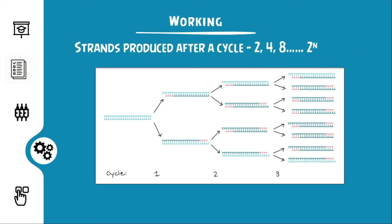For the first cycle, there are around 2 strands produced, and the strand count increases based on the power of 2. For the first cycle, we obtain 2 copies; the second cycle gives 4 copies, and it goes on. Usually, 30 to 45 cycles are considered for good amplification numbers.